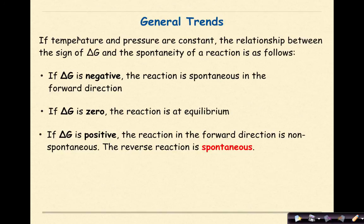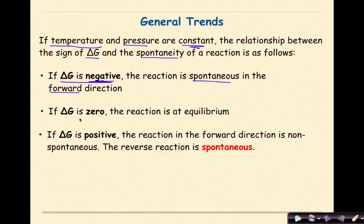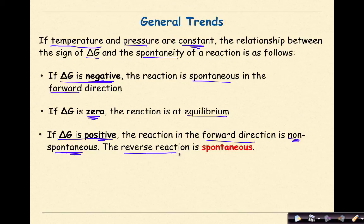General Trends. If temperature and pressure are constant, the relationship between the sign of delta G and the spontaneity of a reaction is as follows. If delta G is negative, the reaction is spontaneous in the forward direction. If delta G is zero, the reaction is at equilibrium. If delta G is positive, the reaction in the forward direction is non-spontaneous, but the reverse reaction is spontaneous.